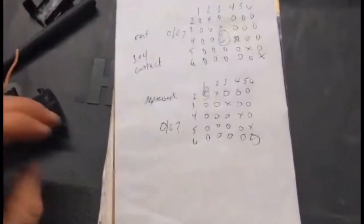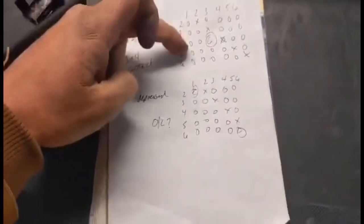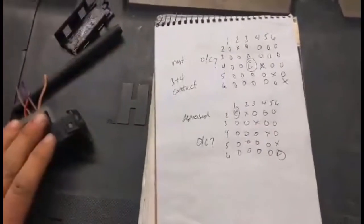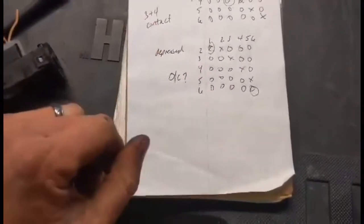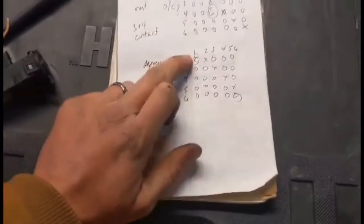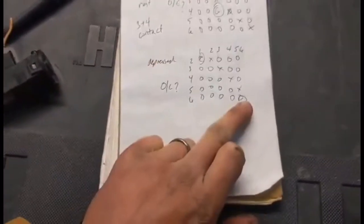So what I found was in the resting position, pins three and four are closed. In the depressed position, your foot's on the clutch, one and two have continuity and five and six have continuity.